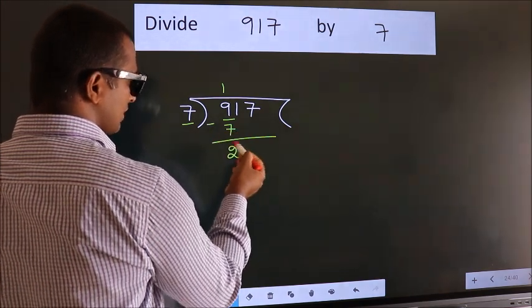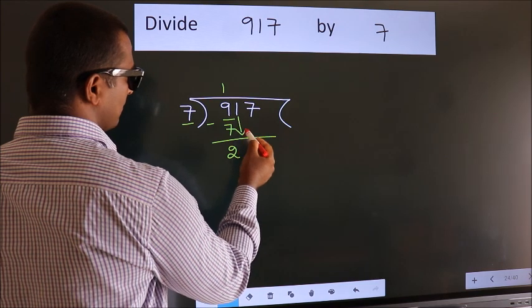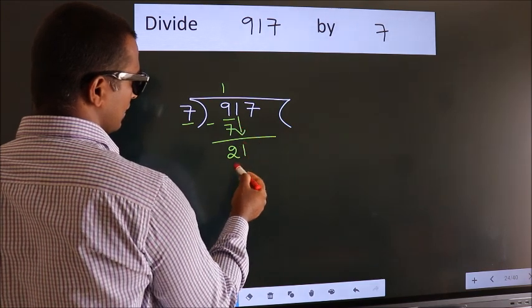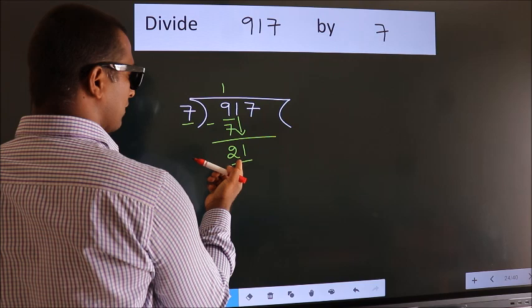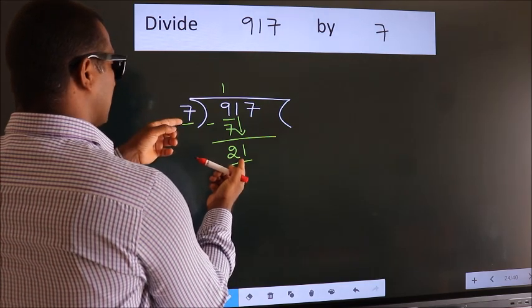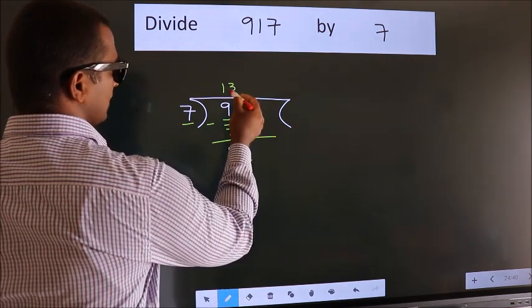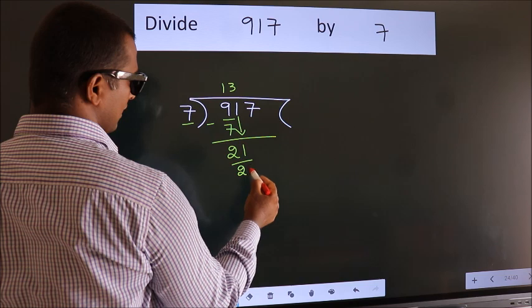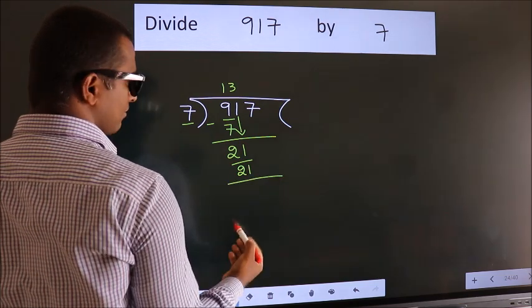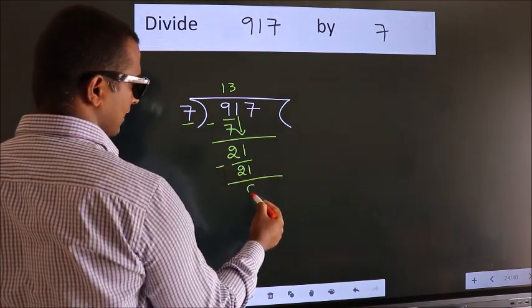After this, bring down the next number. So, 1 down. So, 21. When do we get 21? In 7 table. 7×3 = 21. Now, we subtract. We get 0.